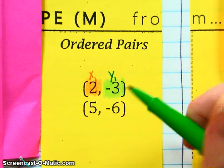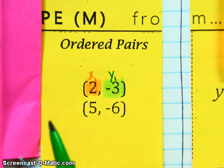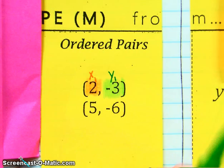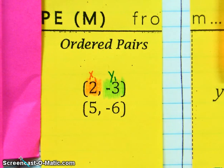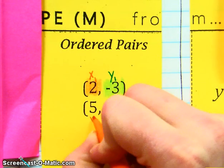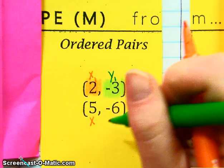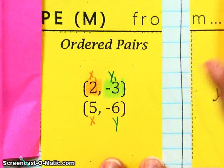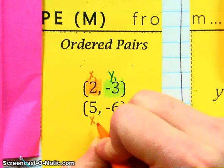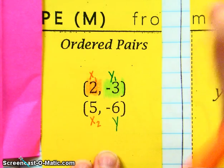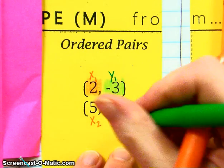The 1 here is indicating that it's from the first ordered pair. It's the X coordinate or the Y coordinate from the first ordered pair. Now, in this second ordered pair, we still have an X coordinate and a Y coordinate, but because it's a different ordered pair, we're going to say it's from the second ordered pair.